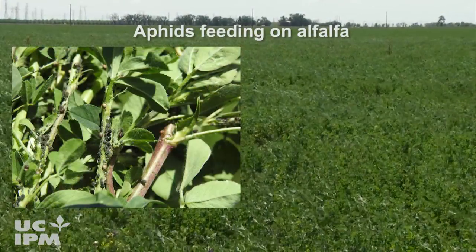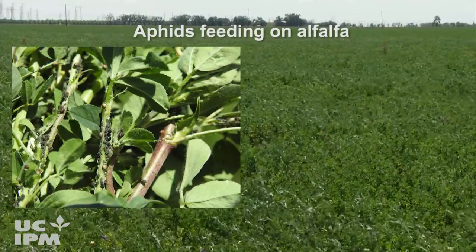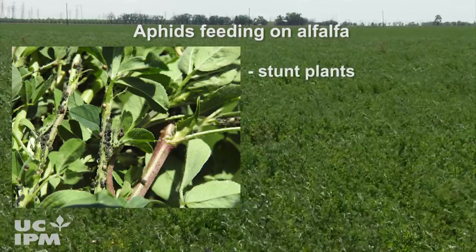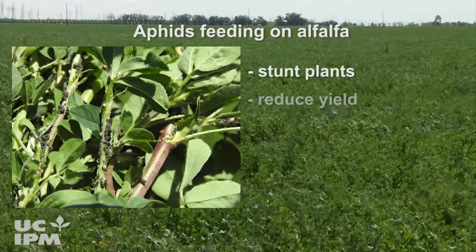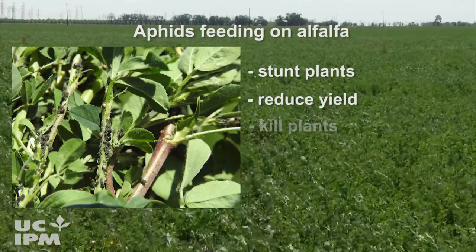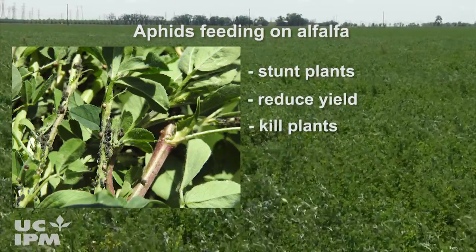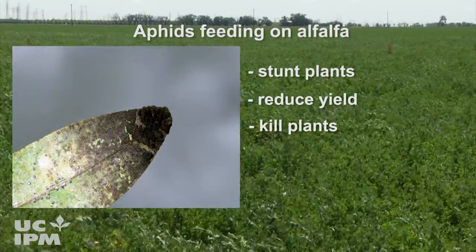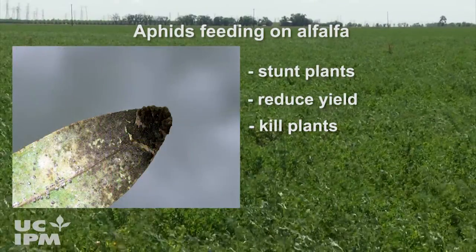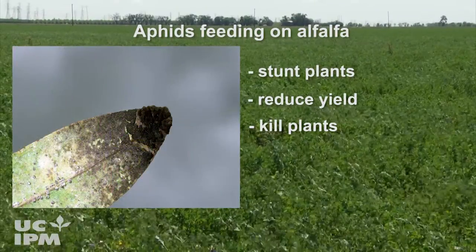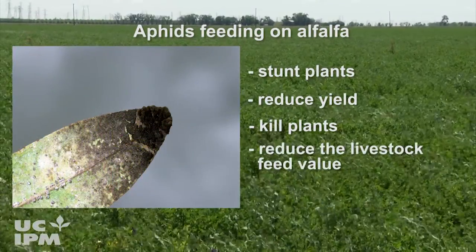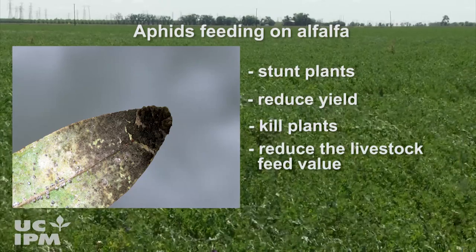Aphids feed on alfalfa and at the same time inject toxins that stunt plants, reduce yield, and may even kill alfalfa plants. Aphids also excrete honeydew and the sooty mold that grows on it reduces the livestock feed value.